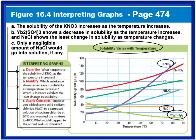The next question asks which substance shows a decrease in solubility as temperature increases — we're looking for a negative slope, one that's going down. The green line is sloping down, so that substance shows a decrease in solubility as temperature increases. Which substance exhibits the least change in solubility? That's sodium chloride — you can see how the orange line is flat, so its solubility really doesn't change with a change in temperature.